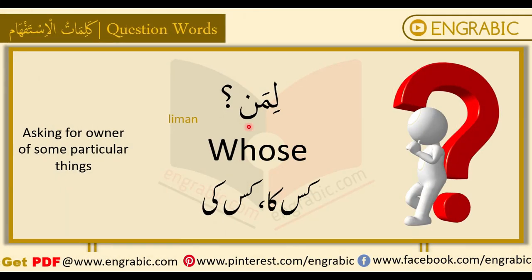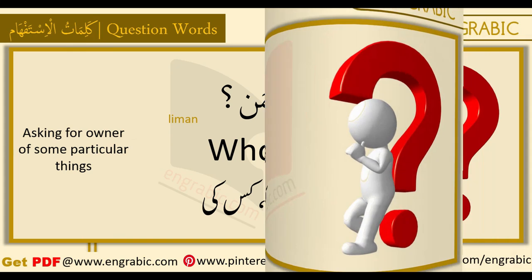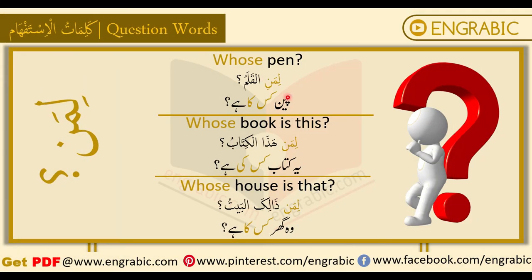Next is 'liman,' which in English means 'whose.' It is used for asking the owner of a particular thing — to find out who something belongs to. For example: 'Whose pen?' — liman il-qalam — pen kiska hai. 'Whose book is this?' — liman hadha al-kitabu — yeh kitaab kiska hai. 'Whose house is that?' — liman dhalikal baitu — wo ghar kiska hai.